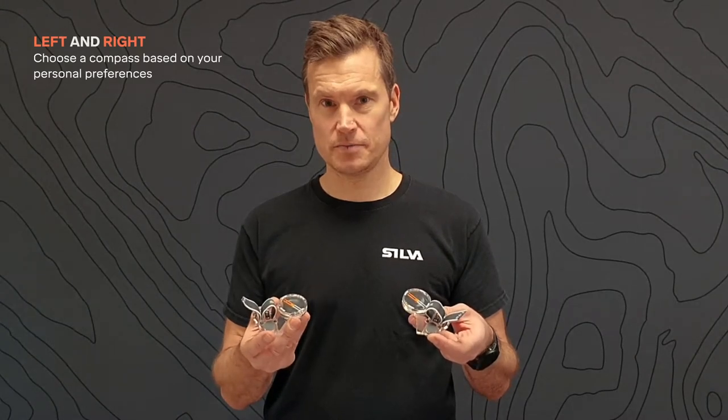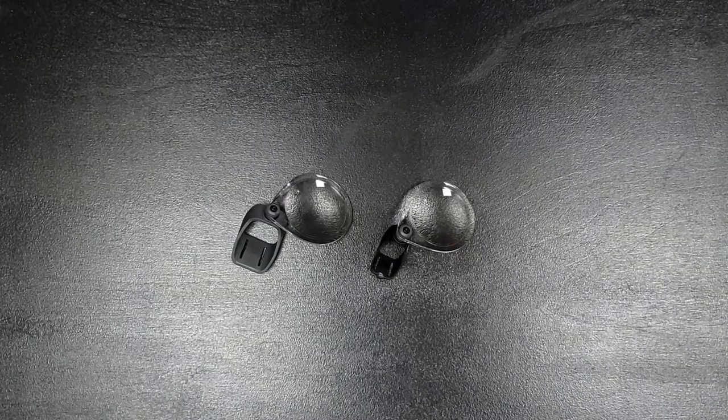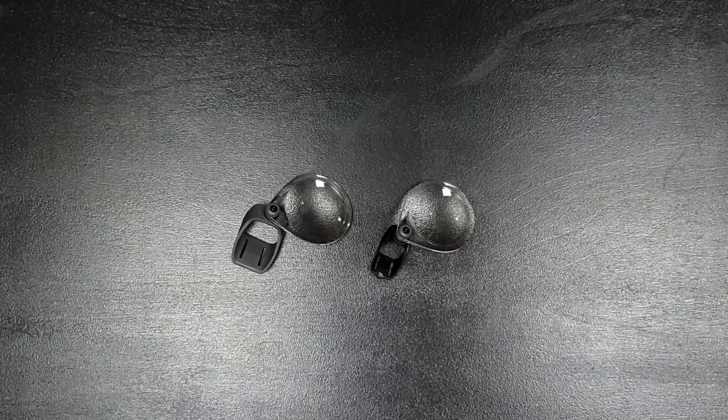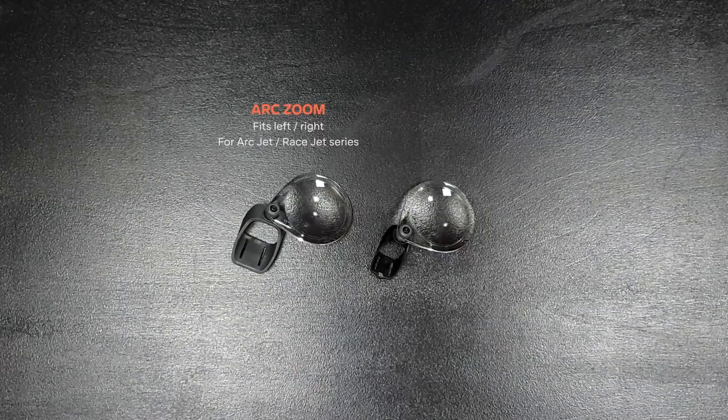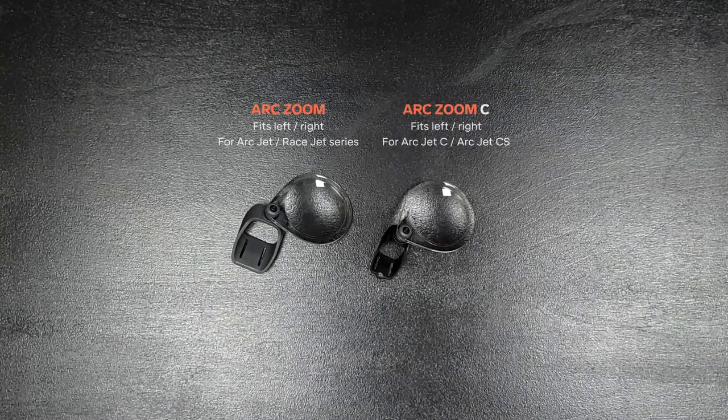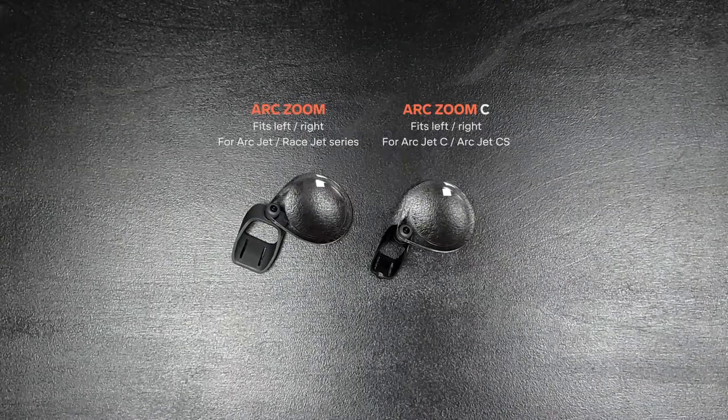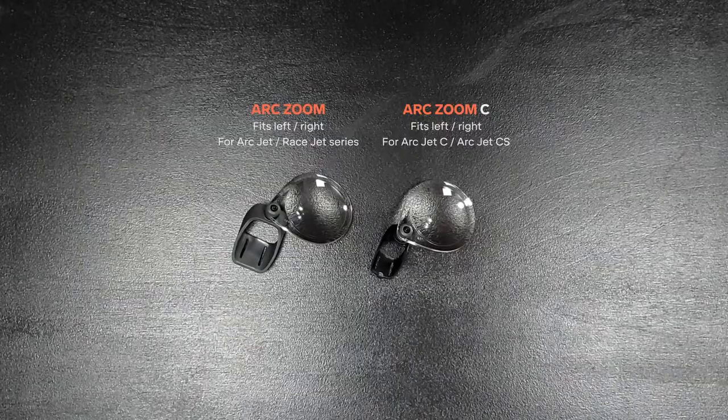All of these compasses, of course, come in a left hand version and a right hand version. We also have these two magnifiers that are easily attached to the base plate and become very well integrated with the compass. The Arcjet Zoom fits the standard left and right models, and the Arcjet Zoom C fits the compact left and right models.